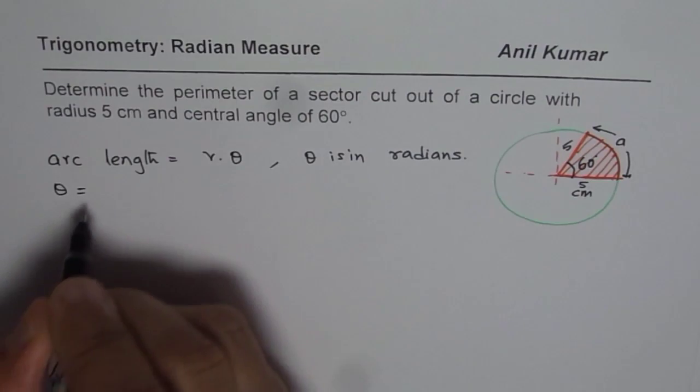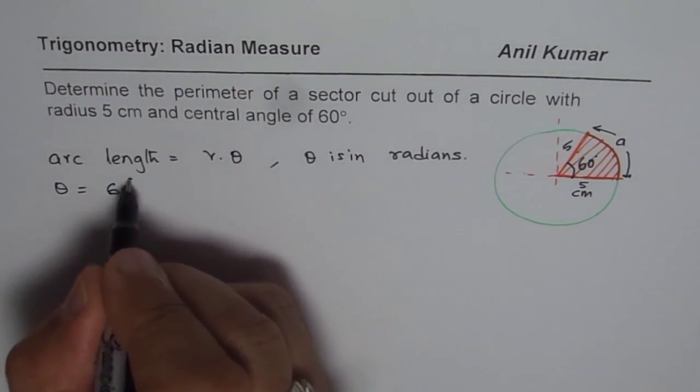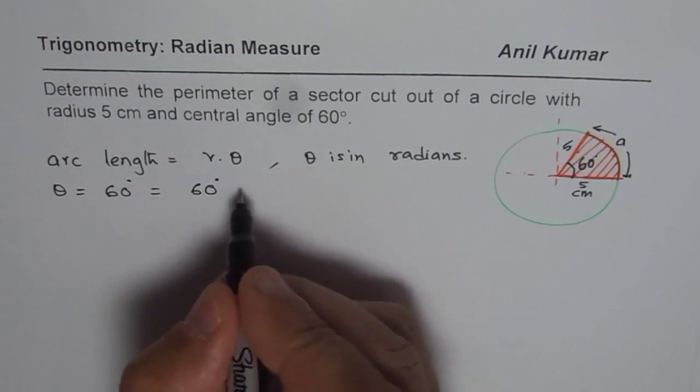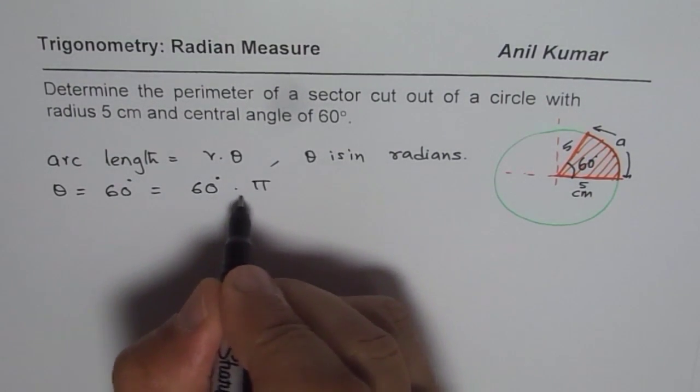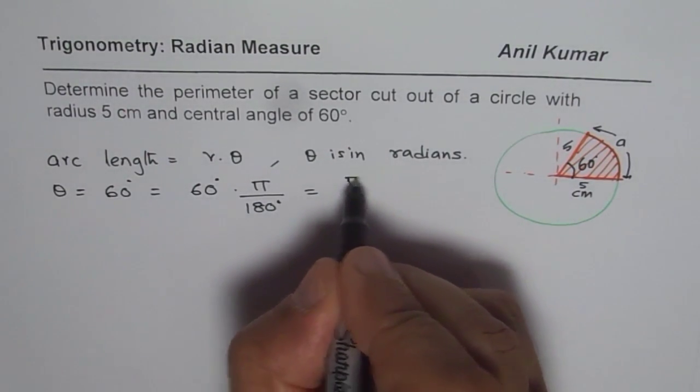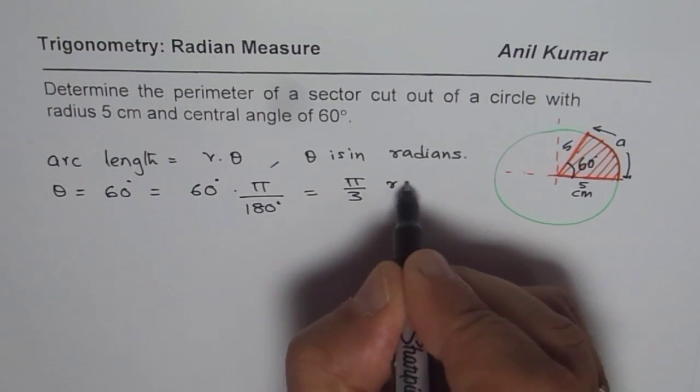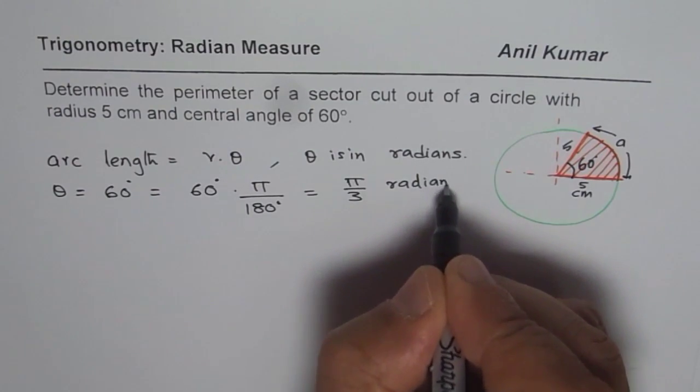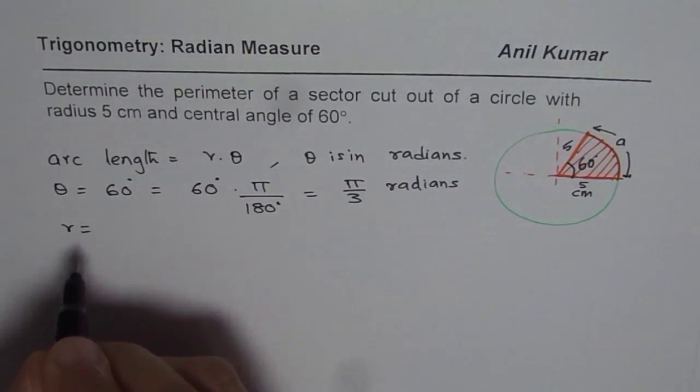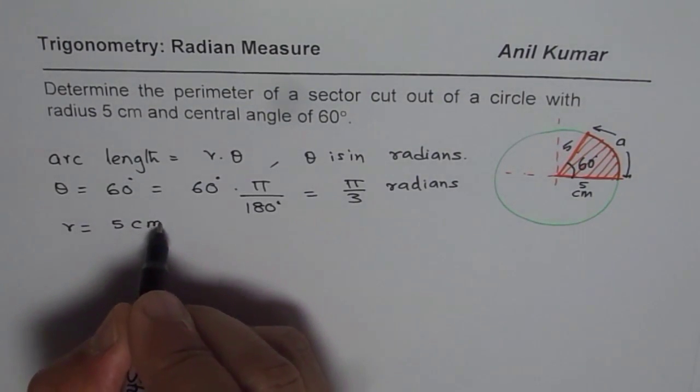What we are given is theta equals 60 degrees, let us convert to radians. So when you want to convert degrees to radians, multiply by π and divide by 180 degrees. So what you get here is π by 3 radians. You are also given that the radius r equals 5 cm.